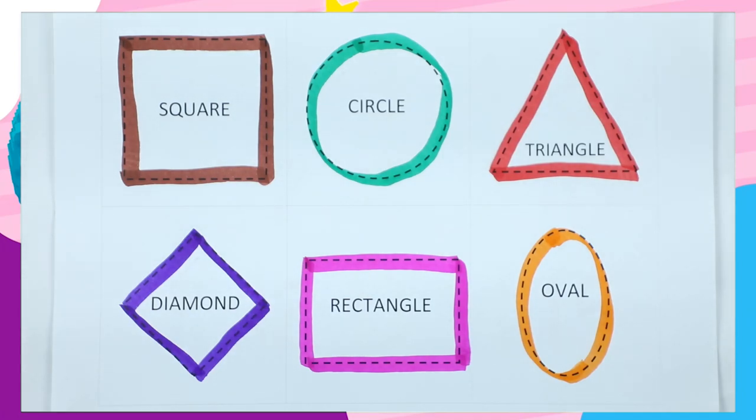Friends, today we learn shapes with color. We recognize shape: square, circle, triangle, diamond, rectangle, oval with colors.